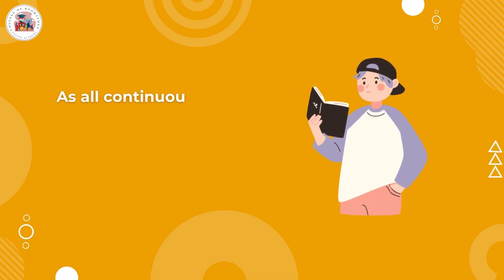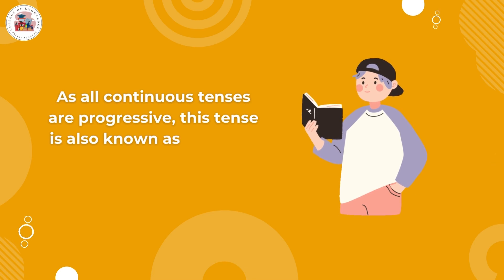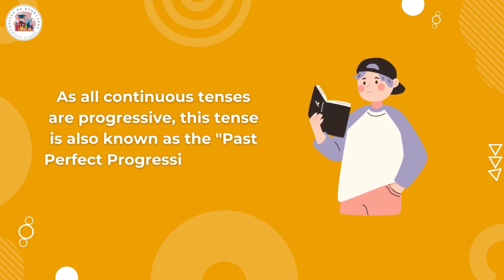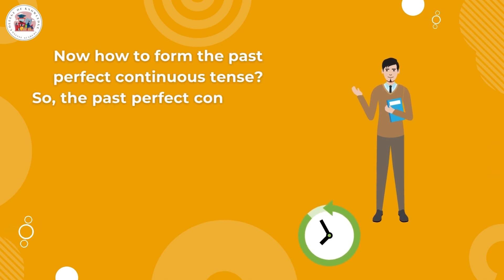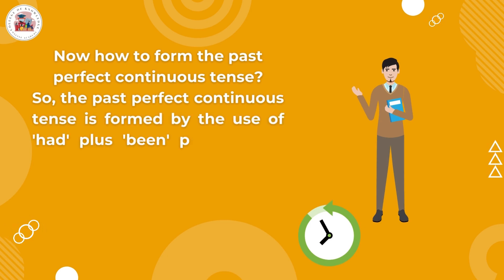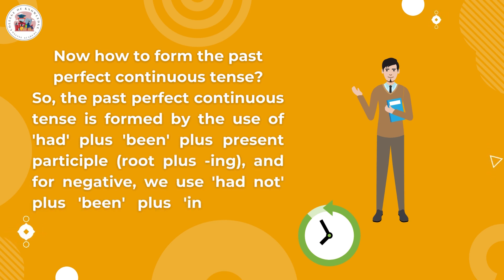As all continuous tenses are progressive, this tense is also known as the past perfect progressive tense. The past perfect continuous tense is formed by the use of had + been + present participle (root + ing). For the negative form, we use had not + been + ing added to the verb.